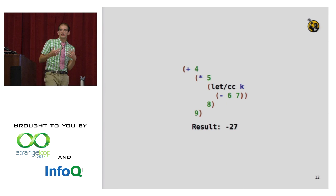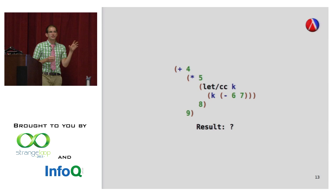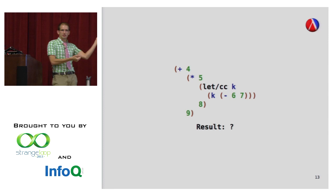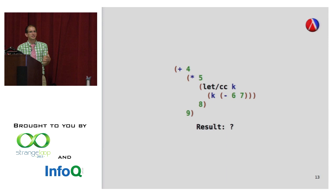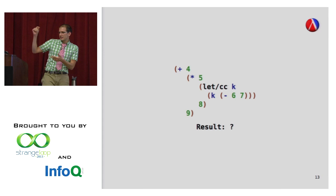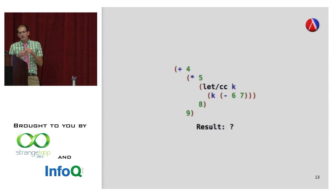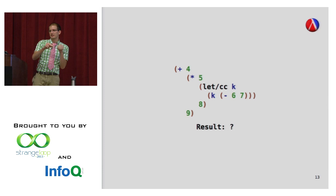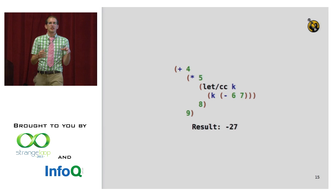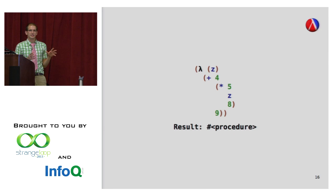The beautiful thing about names is that once you have them, you can start using them all over the place. We can ask: what happens when we actually use this name? Here I've changed the program to name the continuation k, subtract 7 from 6 getting negative 1, and then call k with it. The result is a question mark because this is a test. Do you think the answer is negative 27, or something else?